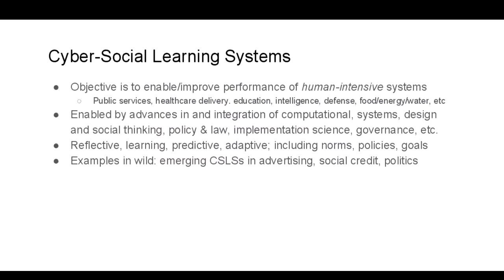Cyber social learning systems seek not just to improve the performance of physical devices, but of human-intensive service delivery systems, enabled by advances and the integration of at least four forms of thinking: computational thinking, systems thinking, design thinking, and social thinking. That social thinking element is absolutely crucial—we're talking about everything from cognitive psychology to mechanism design to behavioral economics and beyond. This will enable us to move from unprincipled and ad hoc integration of computing technologies and human systems to a much more effective basis.